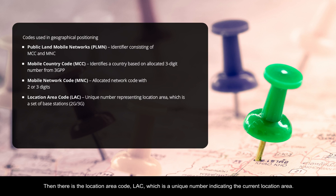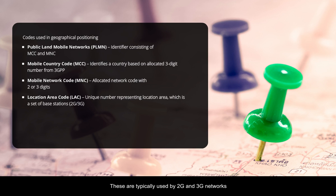Then there is the location area code, LAC, which is a unique number indicating the current location area. A location area is a set of base stations that are grouped together. These are typically used by 2G and 3G networks.